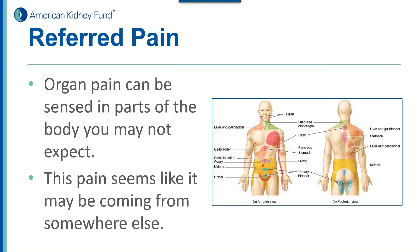Sometimes people describe chest pain as pain in their jaw or arm — that's because pain can be referred, and it has to do with the mapping of your pain receptors. Similarly, kidney pain can be referred to the front, the back, down your legs, or in your groin area. So kidney and urinary tract pain can be felt outside of where your kidneys actually are. It may seem like it's coming from somewhere else, but the organ causing the pain may not be located where you feel it.